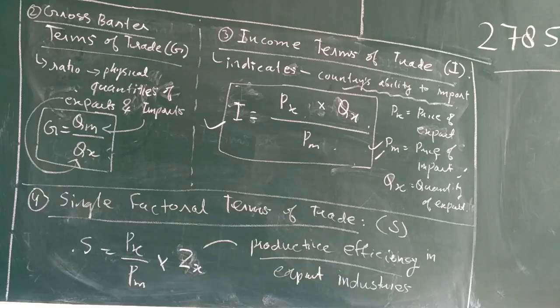This is very important. There are numerous terms of trade and many ratios, but we are taking only the important ones from the point of view of your syllabus and examination. So we have gross barter terms of trade G and income terms of trade I.